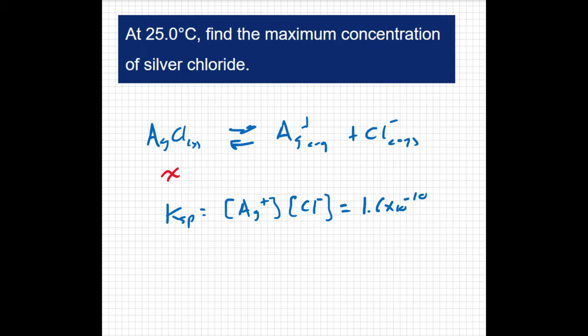We can see that silver and silver chloride are at a 1 to 1 ratio. So if this is X, this is also going to be X. The chloride is also at a 1 to 1 ratio. So if the silver chloride and the silver are X, the chloride is also going to be X. I can plug that into my equilibrium expression.